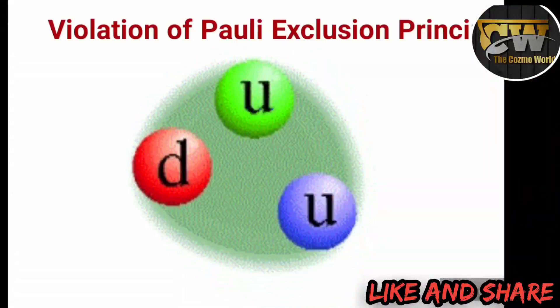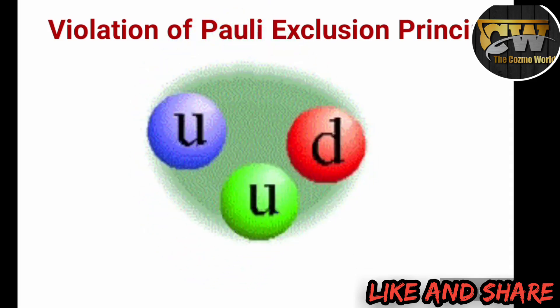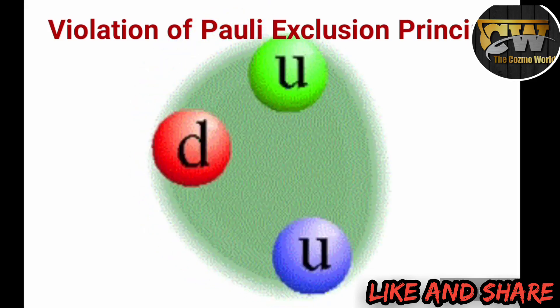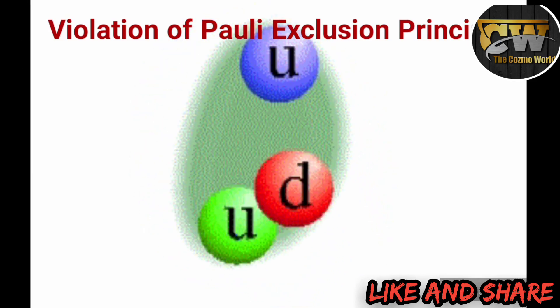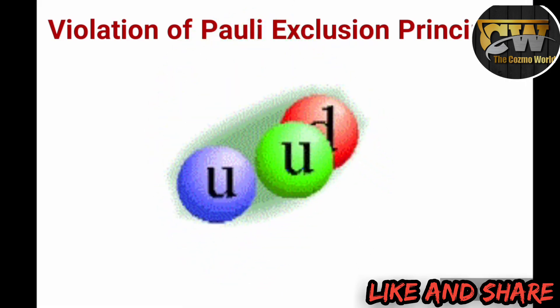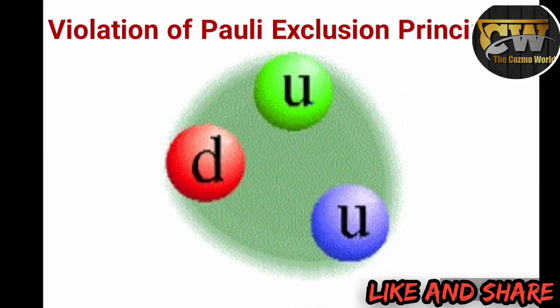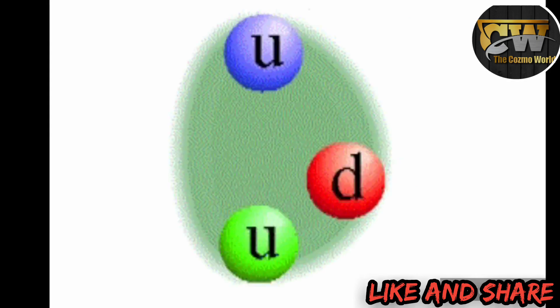As we see, proton has two up and one down quarks. This is the violation of Pauli exclusion principle which states that no two identical objects can occupy the same place. Yet proton contains two up quarks.